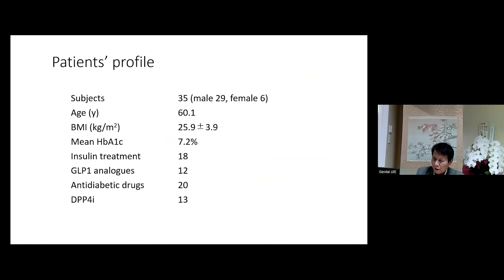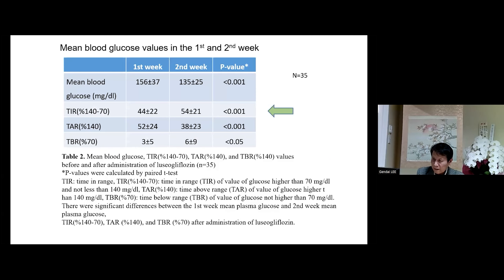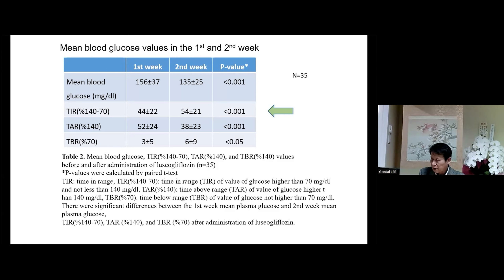Patient profile: total of 35 patients. Mean blood glucose in the first week was 156, and in the second week was 106 — a significant difference between the two. TIR was increased from 44% to 54%, which is significant. Both TIR and TBR showed the usual changes, but importantly the TIR change is the key finding.